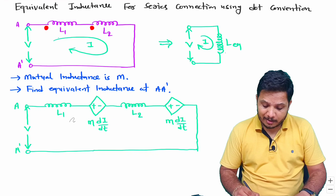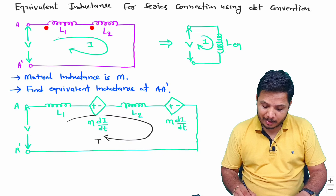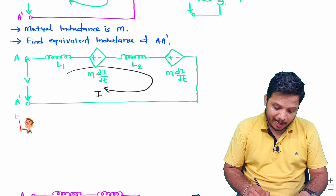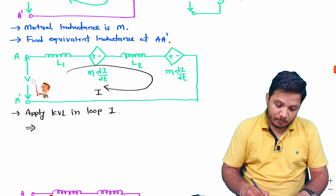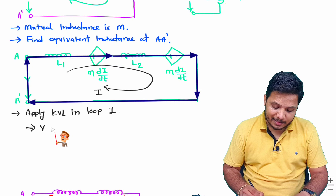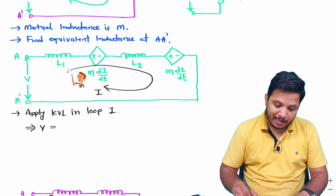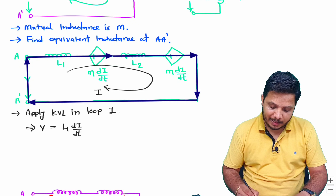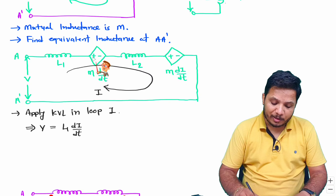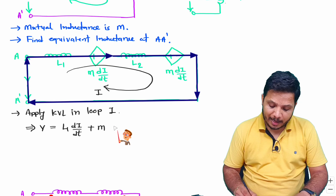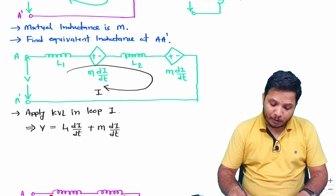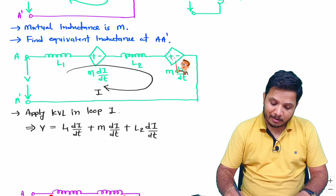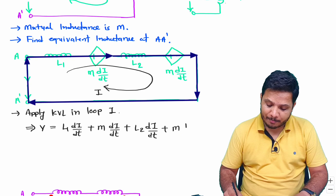Now in this circuit, current I is flowing in the loop. Applying Kirchhoff's voltage law in loop, the supply voltage V equals: voltage across L1 is L1·(di/dt), then the induced EMF has polarity plus-minus so we add M·(di/dt), then voltage across L2 is L2·(di/dt), and then that induced EMF polarity is also plus-minus so we add M·(di/dt).